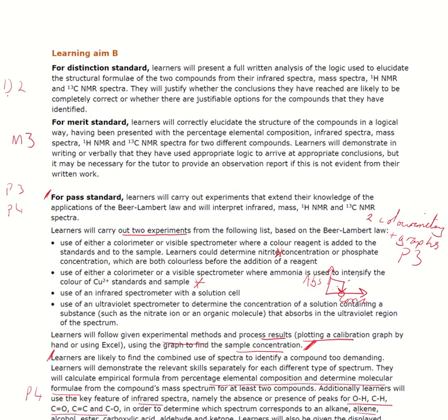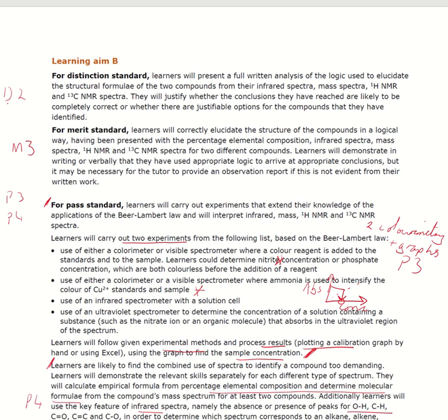Now, onto the higher grades, the merit and distinction. These overlap a fair bit. What you'll be given is multiple combined spectra. So you'll be given an infrared, a mass spec, a proton NMR, and a carbon-13 NMR, and you'll simply be asked to work out what the molecule actually is.